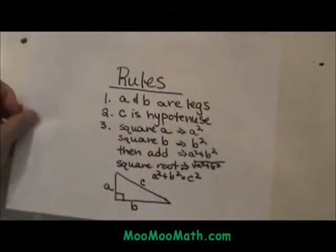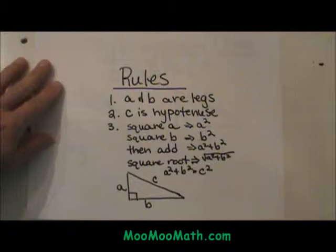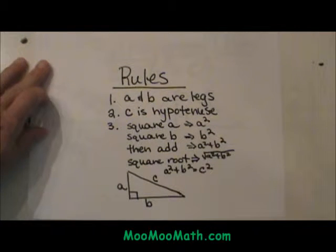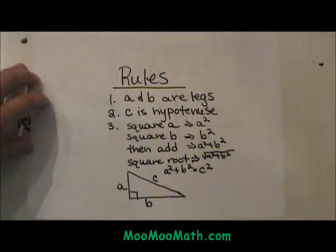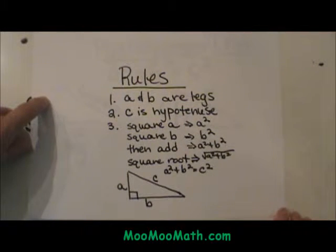Let's look at the formula in a little more detail and look at the rules. The rules are as follows. A and B are always the legs. C is always the hypotenuse. How do you work the formula? It is very simple.